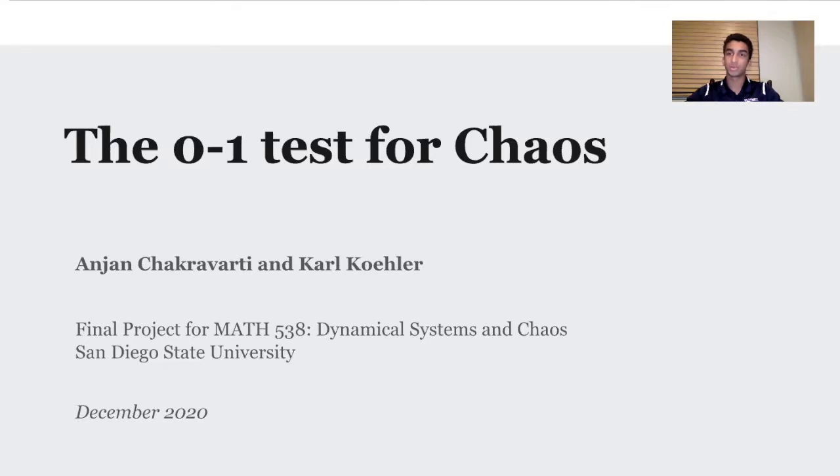Hi, I'm Anjun and I'm in 12th grade. I go to Brentwood School in Los Angeles, California, and this presentation is about the 0-1 test for chaos, which is a revolutionary new test for determining chaotic behavior in dynamical systems. This project is for a math course I dual enrolled in this past fall at San Diego State University. The class, Discrete Dynamical Systems and Chaos, is intended for senior undergraduate and first-year graduate students and was taught by Dr. Antonio Palacios. I researched and presented this originally with my classmate Carl Kaler.